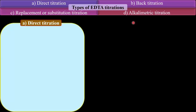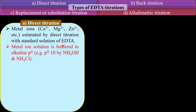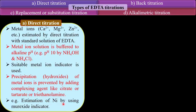In direct titration, the metal ions like Ca2+ ions, Mg2+ ions, Zn2+ ions, etc. are estimated by direct titration with a standard solution of EDTA. In this method, the metal ion solution is buffered to alkaline pH, that is at pH 10, by using a buffer made from NH4OH and NH4Cl. Then a suitable metal ion indicator is added to the solution. During this titration, due to the alkaline nature of the solution, precipitation of the metal ions may take place as their hydroxides. Such precipitation is prevented by adding complexing agents like citrate, tartrate, or triethanolamine. An example of this direct titration method is the estimation of Ni using murexide indicator.